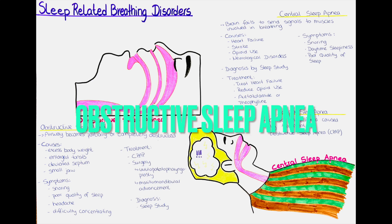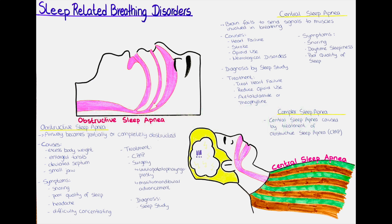Let's first talk about obstructive sleep apnea. Obstructive sleep apnea is a common sleeping disorder that occurs when the airways become partially or completely blocked during sleep, leading to interruptions in breathing. This interruption can last for a few seconds or longer and can occur multiple times during the night, leading to a poor quality of sleep.